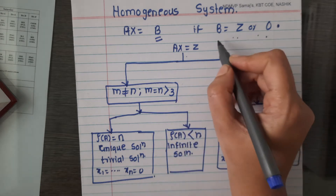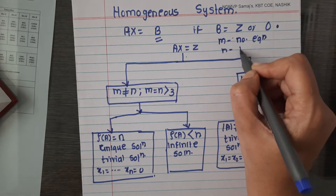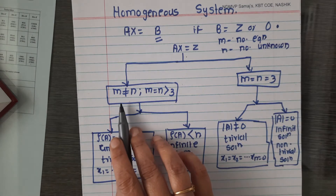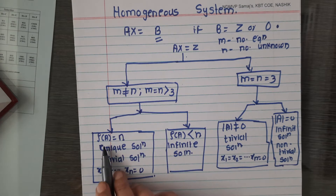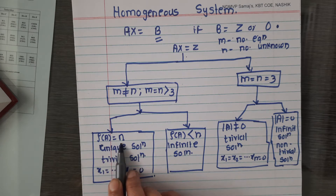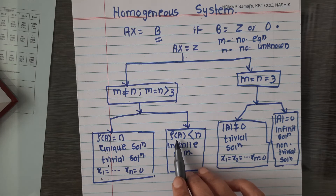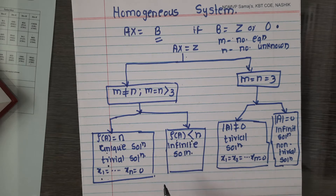For the homogeneous system, let m be the number of equations and n be the number of unknowns. There are two cases. First case: m not equal to n, or m equal to n greater than 3. We find the rank. If rank of the matrix equals the number of unknowns, the system has a unique solution — the trivial solution, meaning all unknowns x1, x2, ..., xn equal zero. Second case: if rank of A is less than n, the system has infinite number of solutions.